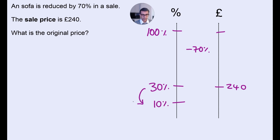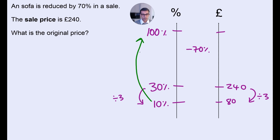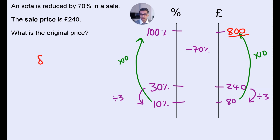So we're going to divide by 3. That's going to give you 80. And then we're going to go up to 100, so multiply by 10. So that will give us 80 times 10 is £800. £800 was the original price of the sofa.